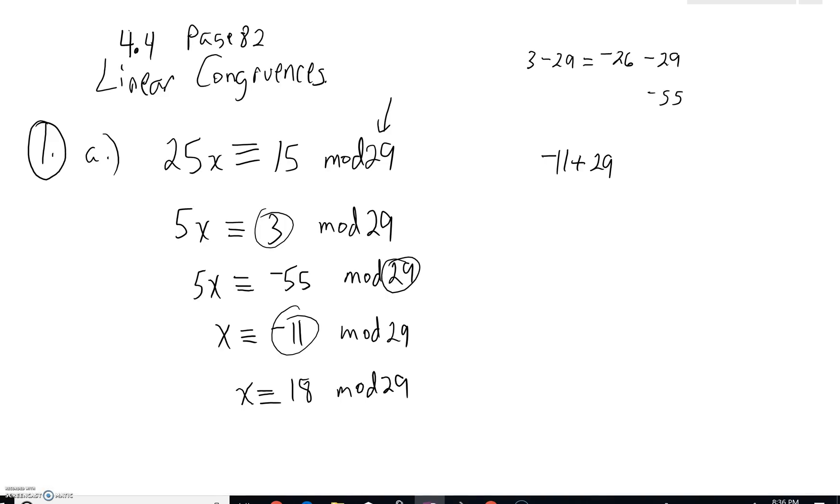Now, by the way, I forgot to address something earlier. The greatest common divisor of 25 and 29 is 1. The GCD is 1, and that means also of course 1 certainly divides 15. So we know in fact there will be a unique solution.